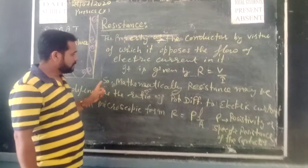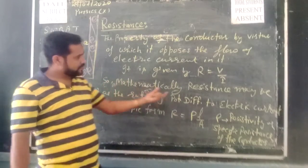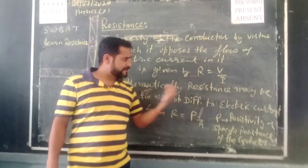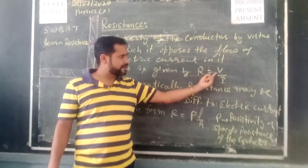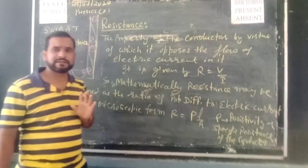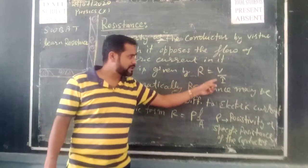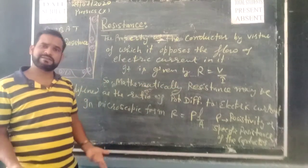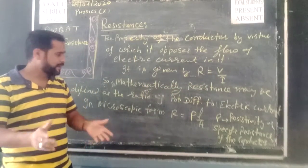Now, the mathematical definition of resistance is also there. It may be defined as the ratio of the voltage — that is, the potential difference — to the electric current. This is also the definition of resistance.